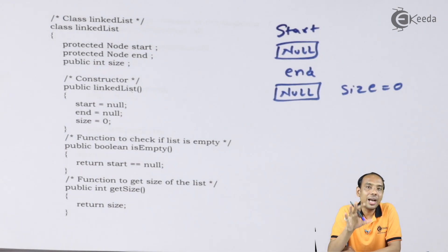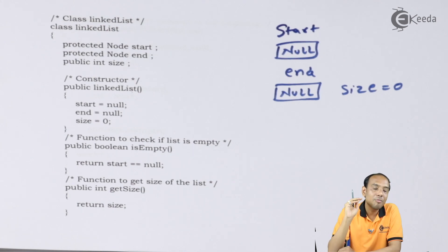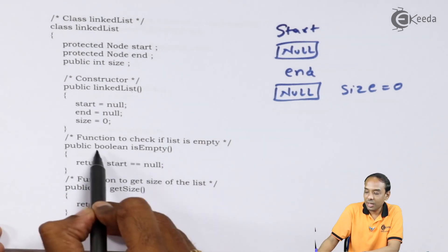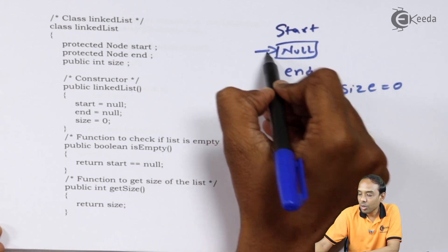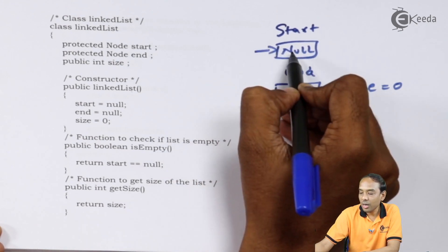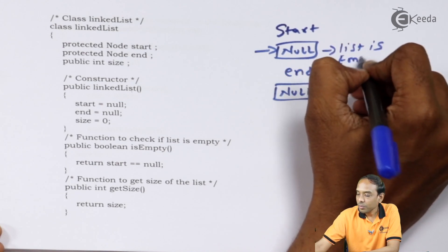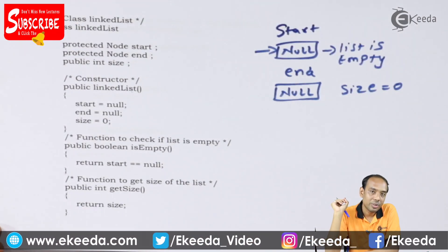We are going to return in the form of true or false — yes, that can be written in the form of boolean only. That's why the return type of the function 'isEmpty' is boolean. I am returning the value 'start == null'. Whenever start is equal to null, that means my linked list is empty.